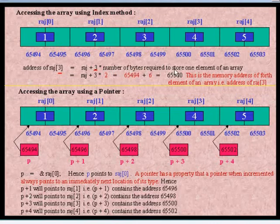We know this is an integer type array, so 2 bytes are required to store one element. That's why I've taken 2 here. RAJ is the name of the array, which is the base address. The base address is 65494, so I've taken 65494 here.